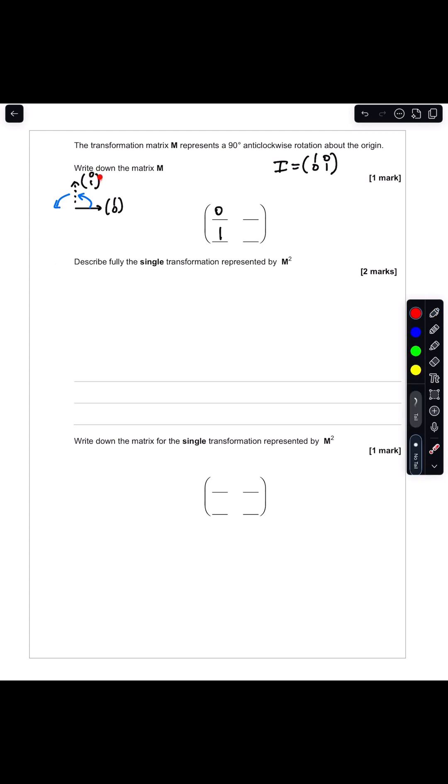Where I once had 0, 1, that becomes negative 1, 0. So I have negative 1, 0. And that's your final answer.